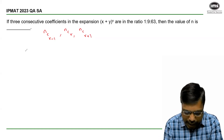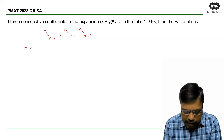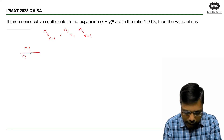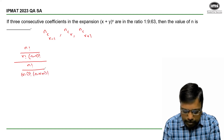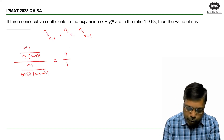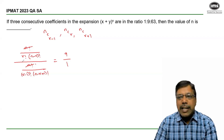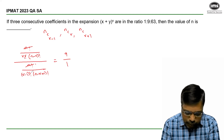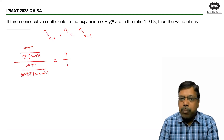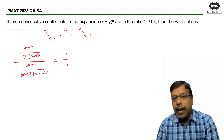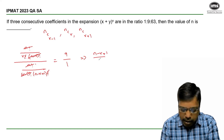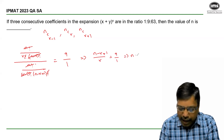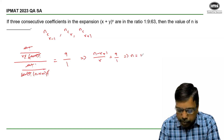Taking two coefficients at a time, nCr divided by nCr-1 equals n! divided by (r! × (n-r)!) whole divided by n! divided by ((r-1)! × (n-r+1)!), which is equal to 9/1. n! is common. r! can be written as r × (r-1)!, so (r-1)! gets cancelled. Similarly, (n-r+1)! can be written as (n-r+1) × (n-r)!, which gets cancelled. So we get (n-r+1)/r = 9, thereby n = 10r - 1.